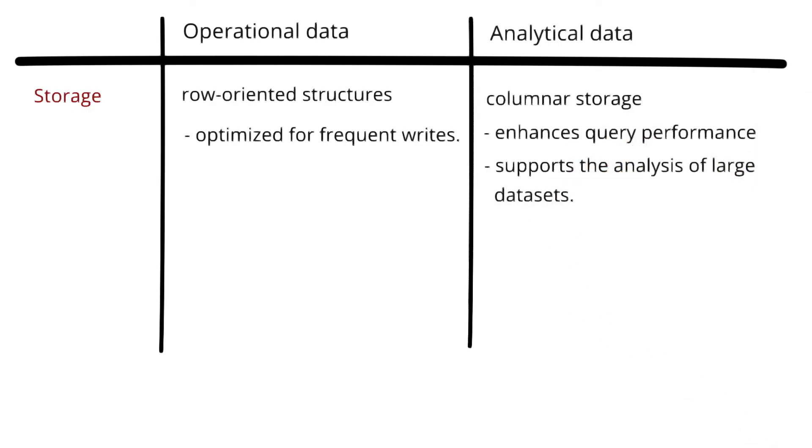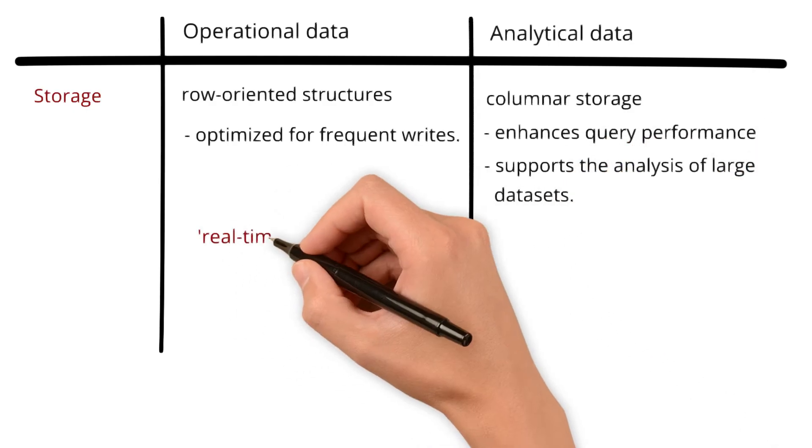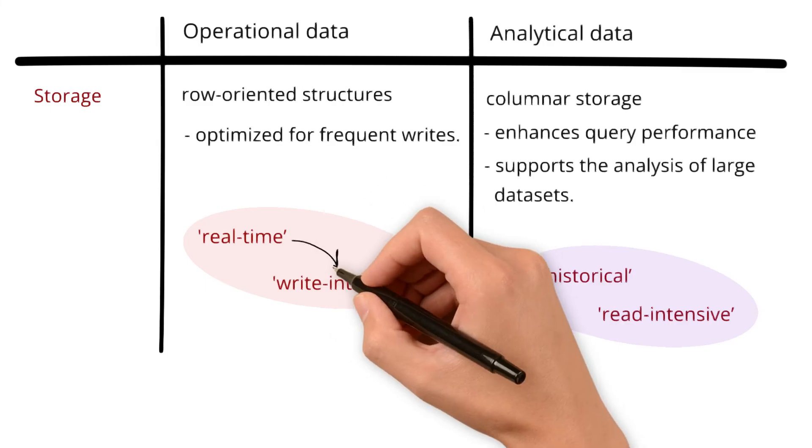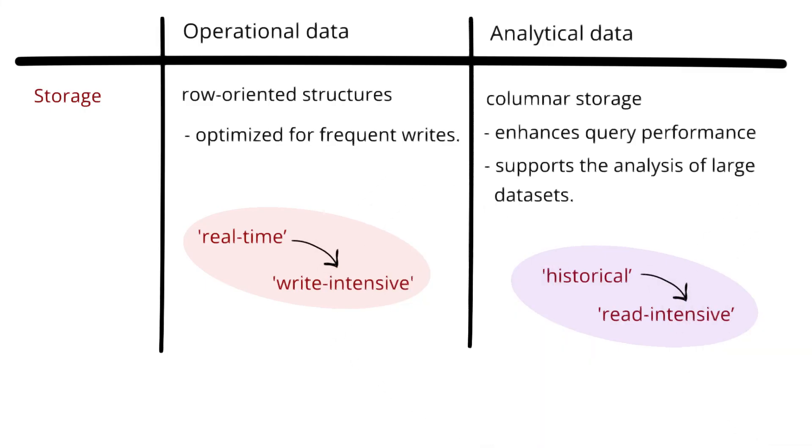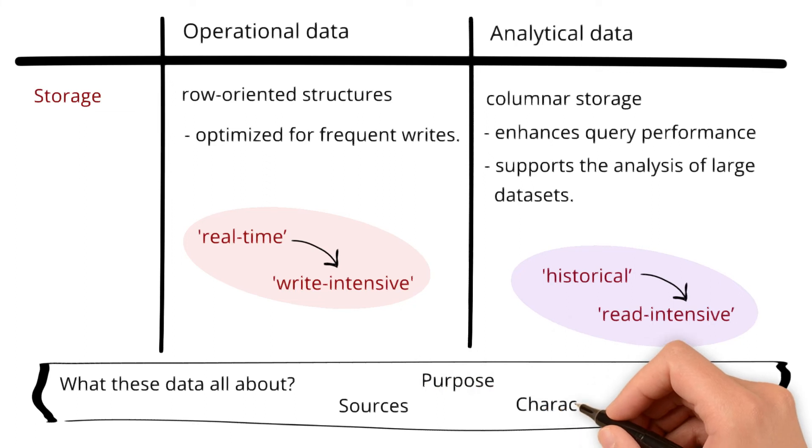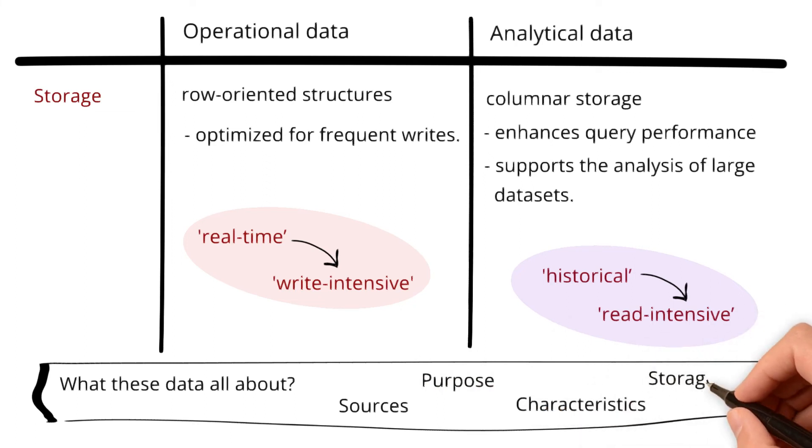See, you are repeatedly hearing the words like real-time, historical, read-intensive, and write-intensive. This is because all the characteristics are interconnected. That's why you are hearing the same things on different occasions. So far, we have covered the differences in terms of what these data are all about, sources, purpose, characteristics, and storage mechanisms.